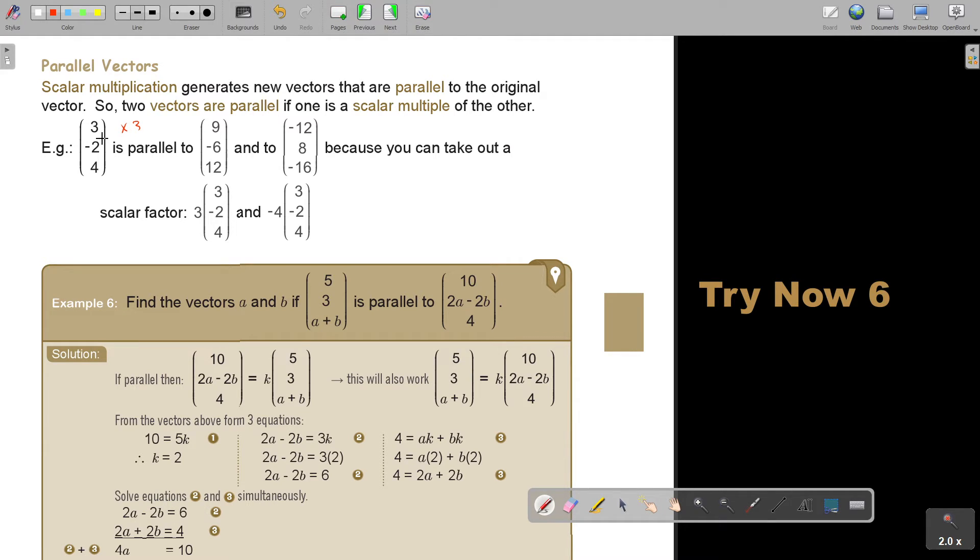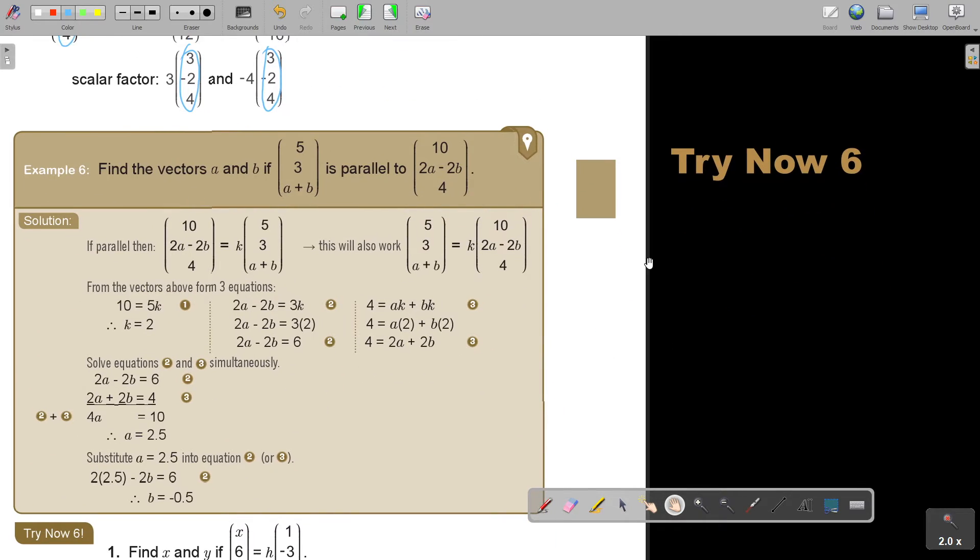Because you can take out the scalar 3 and negative 4. So as soon as you see you can take out the scalar and you are getting the original one, then the vectors will be parallel. But let's use that principle. Let's look at the example first. Find the vectors a and b if this is parallel to this. So if this is parallel, I take out the k.